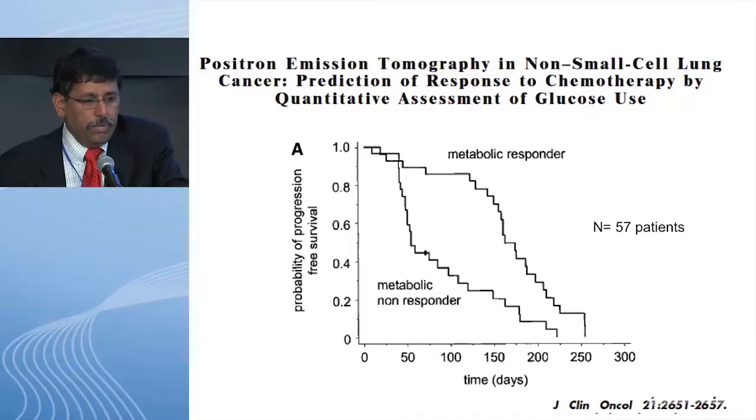My main concern is over-interpreting SUV — like treating a change from 14 to 16 as significant. That's like going from a PSA of 85,000 to 89,000; it's not clear it helps us. Quite often I see treatment changes being made because the SUV went from 14 to 18, and I would caution against that.